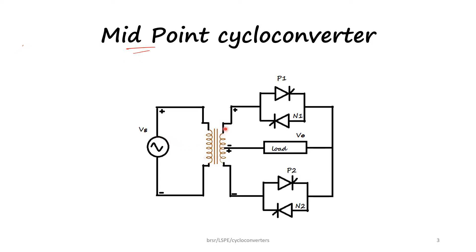In this circuit we see four switches — four thyristors marked as P1, N1, P2, and N2 — and the load is connected from the neutral point to the junction of the two groups of thyristors. During the positive half cycle of the supply voltage, there is plus on the top and minus on the bottom of the primary of the transformer. The same thing appears in the secondary side also, so plus is available on top and minus at the neutral point.